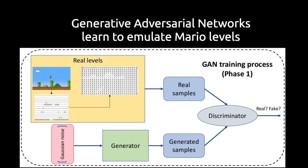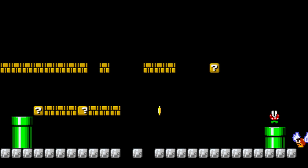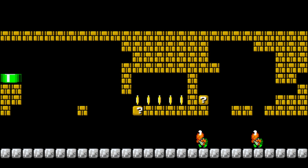That is it pretty much. Here we have an overview of the whole process. The generator in green on the bottom is the shady guy, which generates levels based on a random input vector. The discriminator is the detective who tries to figure out whether he is seeing real or fake levels. All levels are represented as matrices where each cell contains a character that encodes a specific tile in Mario.